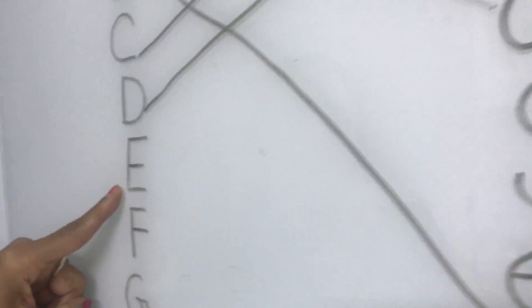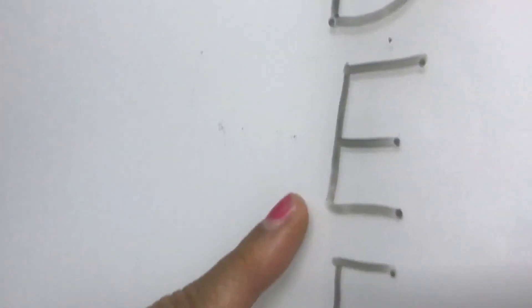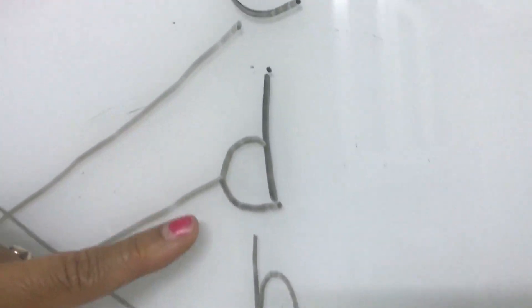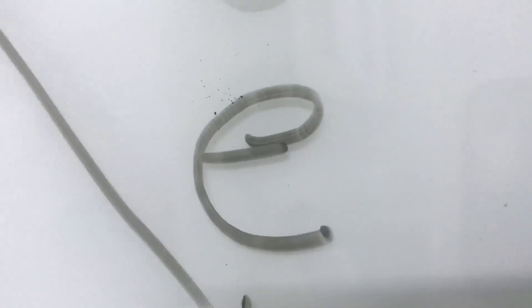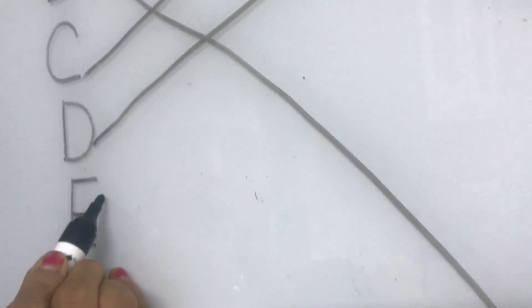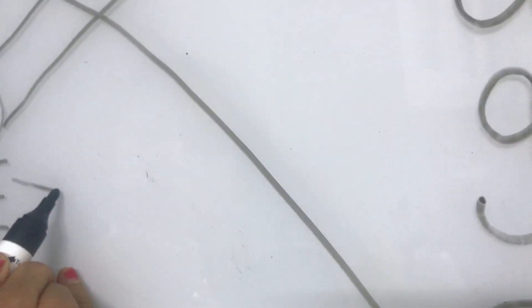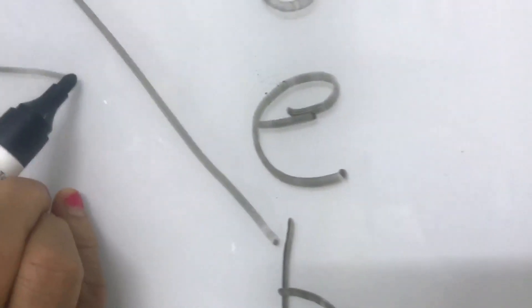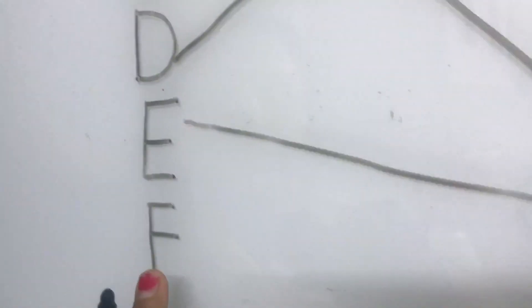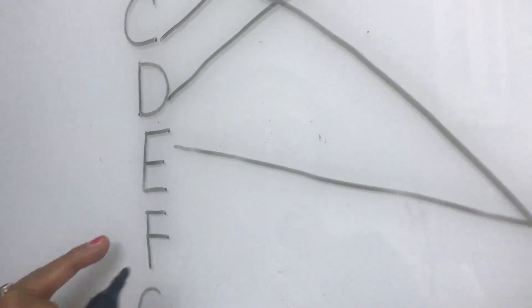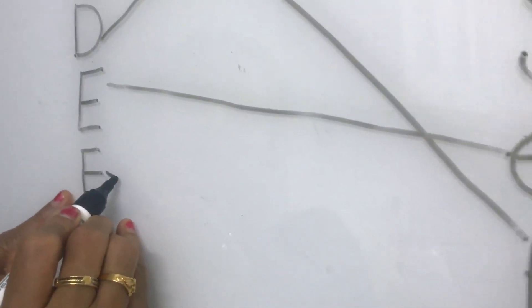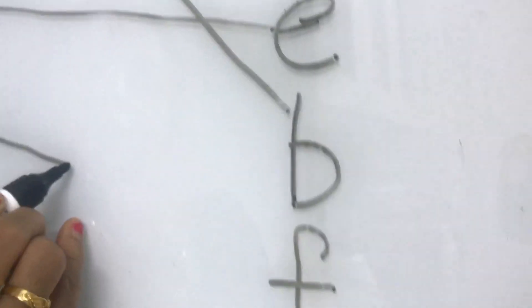What is this letter? This is capital E. Where is small E children? So from E we should go to small E. Now this is capital F. Capital F to small F.